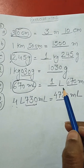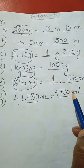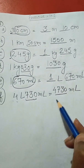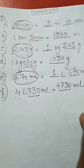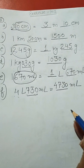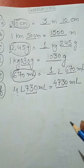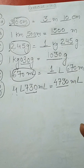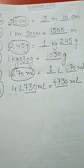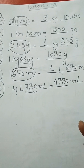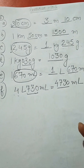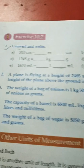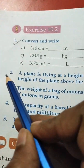If sums are given in the form of blanks, we can use this trick. But if the sums say 'solve' or 'convert,' we must use the proper method, which I will explain in the next exercises.